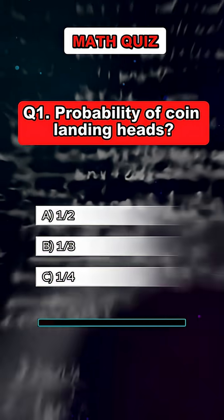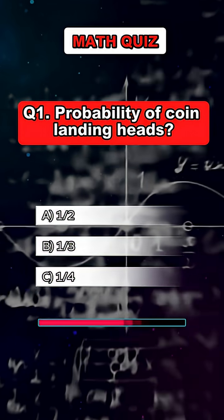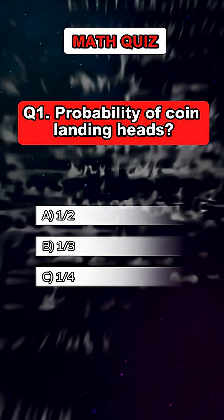Question 1. Probability of coin landing heads. Answer: A, 1 half.